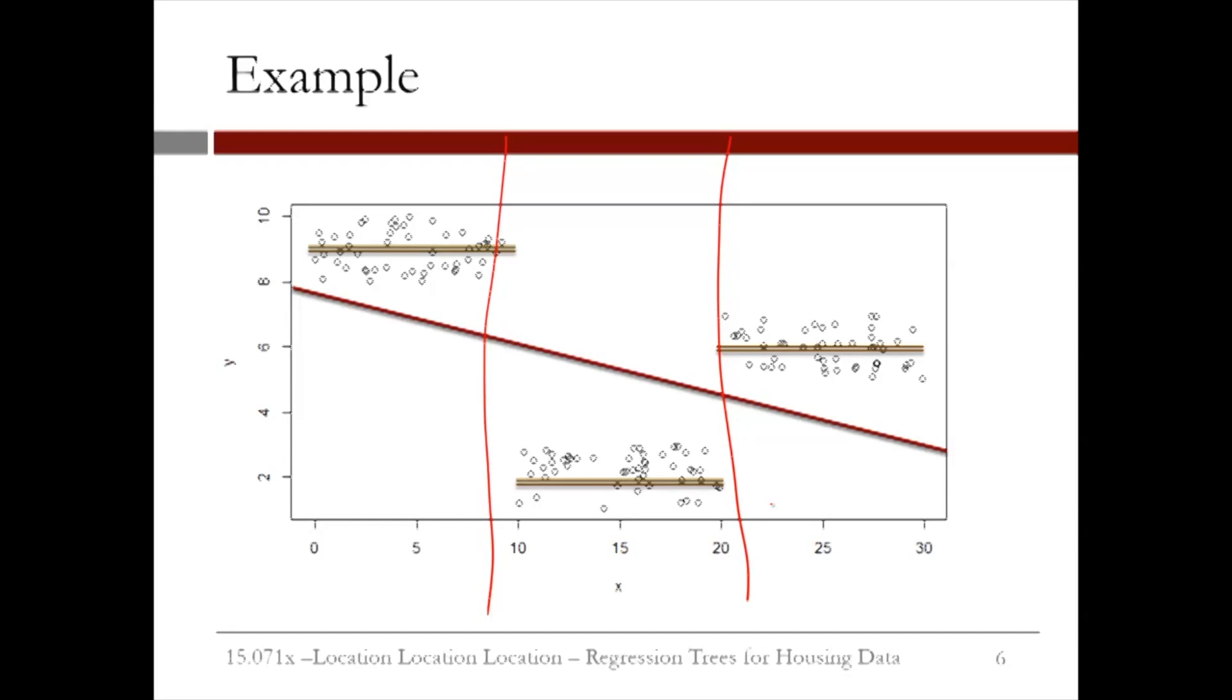Regression trees can fit that kind of thing exactly. So the splits would be x is less than or equal to 10, take the average of those values; x is between 10 and 20, take the average of those values; x is between 20 and 30, take the average of those values. We see that regression trees can fit some kinds of data very well that linear regression completely fails on.